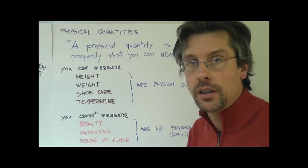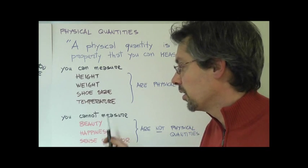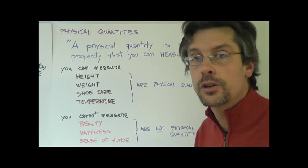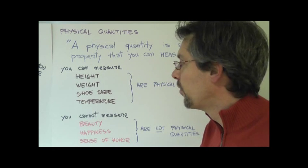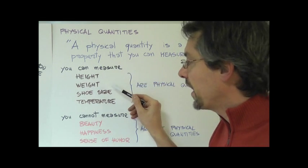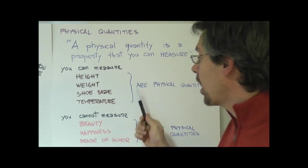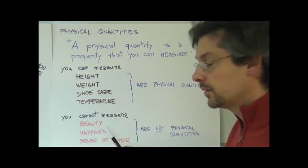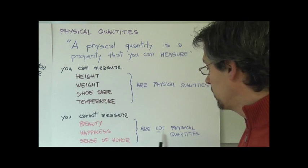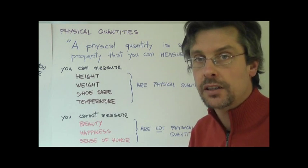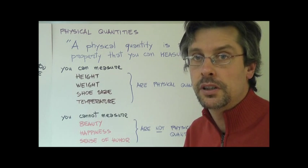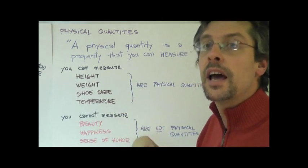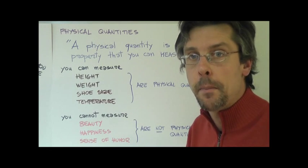But unfortunately, we cannot measure how good you look, if you're happy, or your sense of humor. For this reason we say that height, weight, shoe size and body temperature are physical quantities. On the other hand, beauty, happiness, sense of humor are not physical quantities. So they're not part of a field that we call physics. We're not going to deal with them. We're going to deal with these things and similar quantities that we can measure.